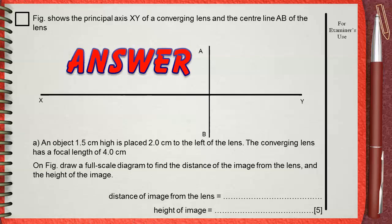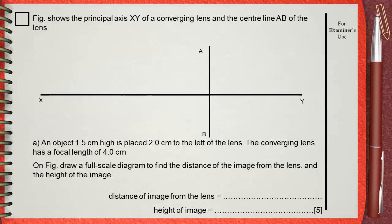Use your ruler to measure 4 centimeters from the lens AB and at this distance mark the focus F1. On the other side of the lens AB measure 4 centimeters and mark the second focus F2.